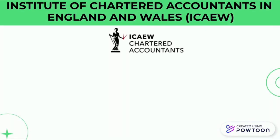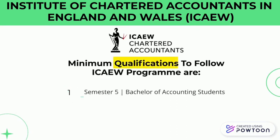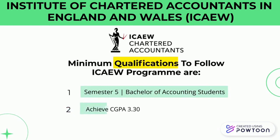The last professional paper to be discussed in this video is the Institute of Chartered Accountants in England and Wales, or ICAEW. It has two minimum qualifications: you must be at least in semester 5 of the Bachelor of Accounting degree, and achieve a minimum GPA of 3.30.